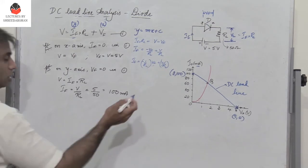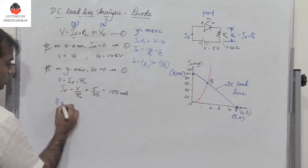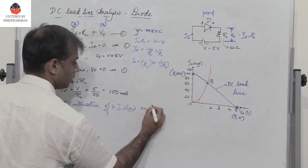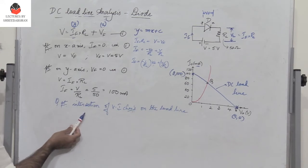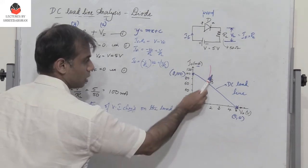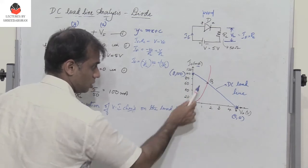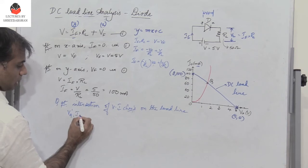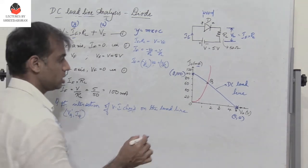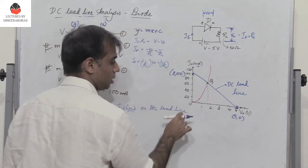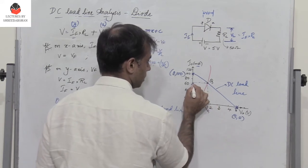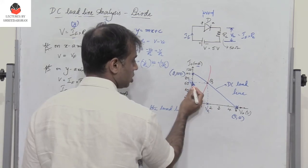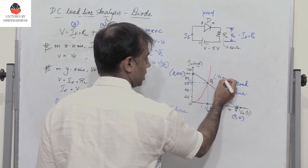The Q point is obtained by the intersection of the VI characteristics of the diode and the load line. Dropping a perpendicular from the Q point onto the horizontal axis gives VQ, and drawing a line parallel to the horizontal axis gives IQ. So the voltage and current at Q are VQ and IQ respectively.